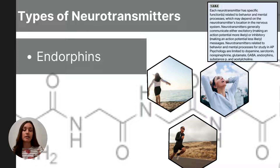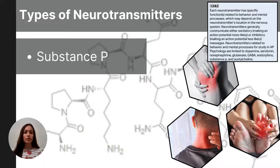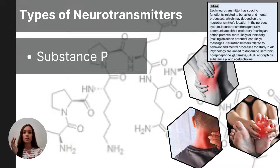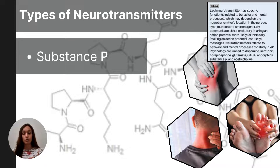Substance P is similar to endorphins because it is also related to pain. Whereas endorphins temporarily block pain and give a sense of relief, substance P is the message that alerts the brain that the body is in pain. Substance P transmits pain signals from the body to the brain and is related to the body's inflammation and immune responses. An oversupply of substance P can be associated with chronic pain.